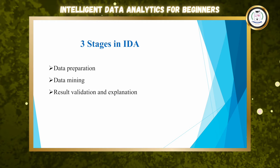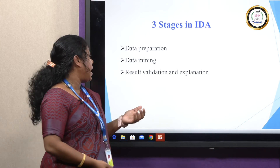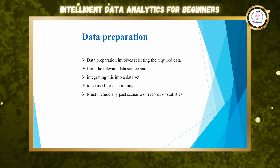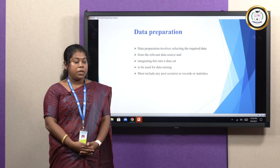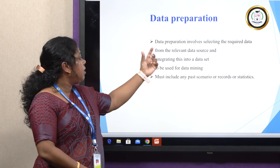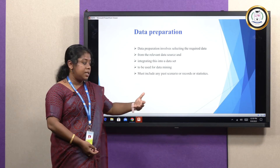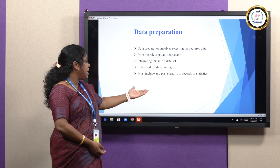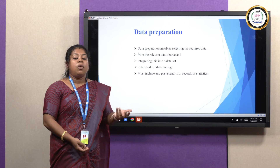There are three stages in Intelligent Data Analysis: data preparation, data mining, and result validation and explanation. Data preparation means initially we need to find out the problem, and based on the problem we need to collect the data. Data preparation involves selecting the required data from relevant data sources, integrating them into a dataset, and it can also include past scenarios, records, or statistics.